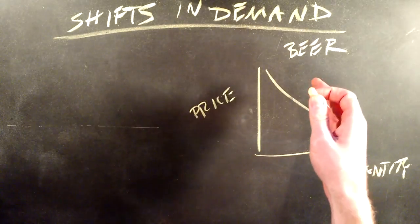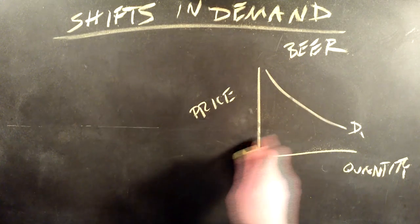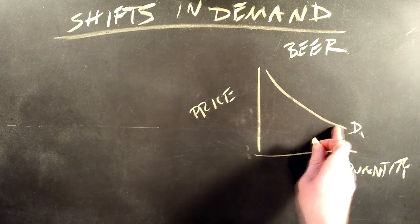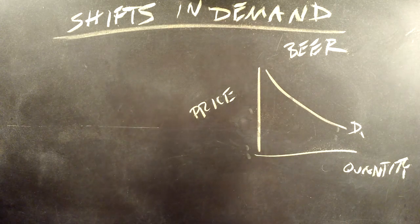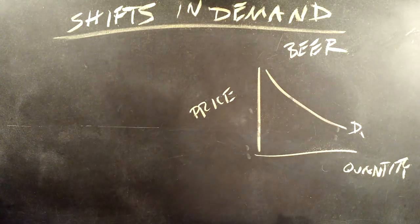The Law of Demand says the higher the price, the lower the quantity demanded will be. The lower the price, the higher the quantity demanded will be. Demand curves are downward sloping. A change in price is a movement along the demand curve.